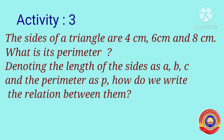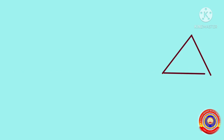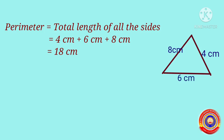Activity number 3. The sides of a triangle are 4 cm, 6 cm, and 8 cm. What is its perimeter? Here is a triangle and the length of all sides are given as 8 cm, 6 cm, and 4 cm. We have to find the perimeter of this triangle. Perimeter is equal to the total length of all sides, that is equal to 4 cm plus 6 cm plus 8 cm, that is equal to 18 cm.